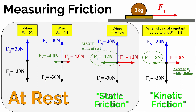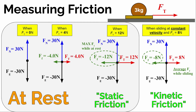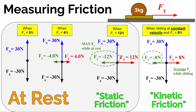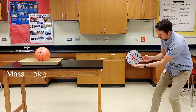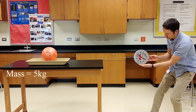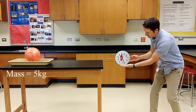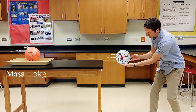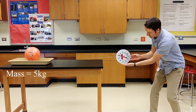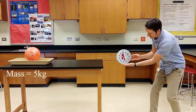It turns out we have names for those two forces. Static friction is the word we use to describe the friction between two surfaces which are in contact but at rest with respect to one another — there's no sliding going on. The frictional force between two objects when the two surfaces are sliding with respect to one another, we call that kinetic friction. Here I swapped out the 3 kilogram bowling ball with a bowling ball and sled with a combined mass of about 5 kilograms. Let's watch the spring scale and find out how big the maximum static frictional force is and what the kinetic frictional force is while it's moving.